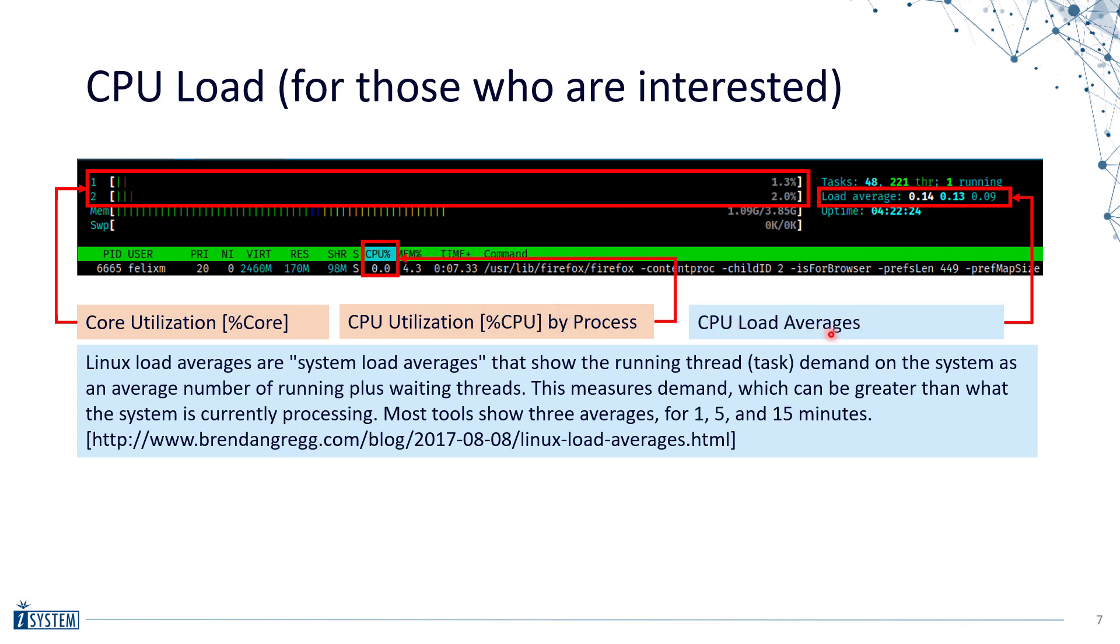But then we also have the load average. You can see it's not a percentage value. Basically it's an exponential moving average that is calculated for one minute, five minute and 15 minute periods. This exponential moving average is calculated for how many threads are active, where active means either running or waiting for a specific time window. The first point to notice here is that this value can be higher than one. For a specific timeframe more than one thread could be running or waiting at the same time.